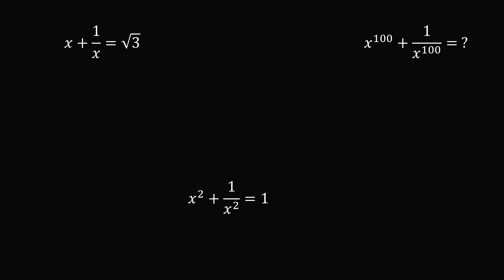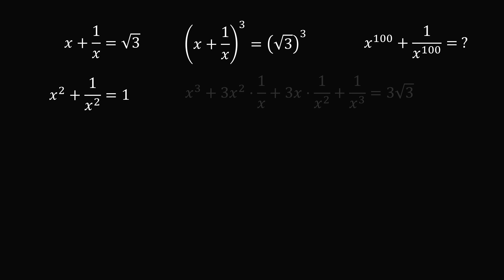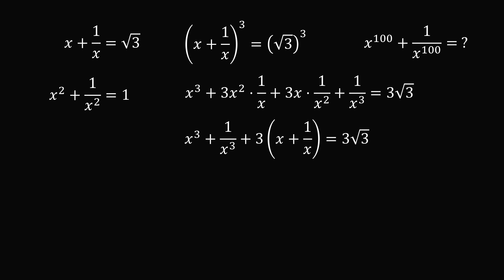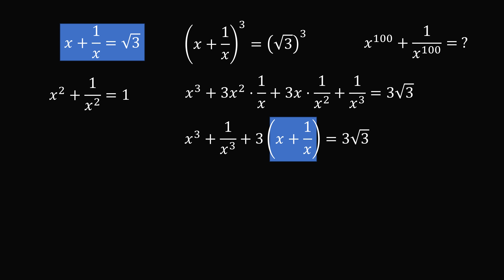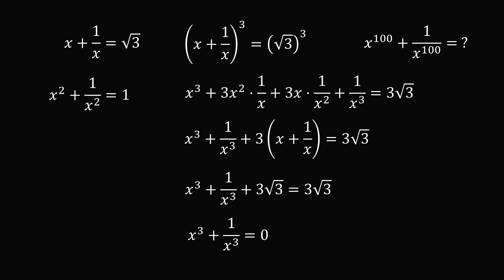We'll also cube the original equation. Expanding gives x cubed plus 3x squared times 1 over x plus 3x times 1 over x squared plus 1 over x cubed equals 3 root 3. Simplifying, x cubed plus 1 over x cubed plus 3 times (x plus 1 over x) equals 3 root 3. Substituting x plus 1 over x equals root 3 gives x cubed plus 1 over x cubed plus 3 root 3 equals 3 root 3, so x cubed plus 1 over x cubed equals 0.